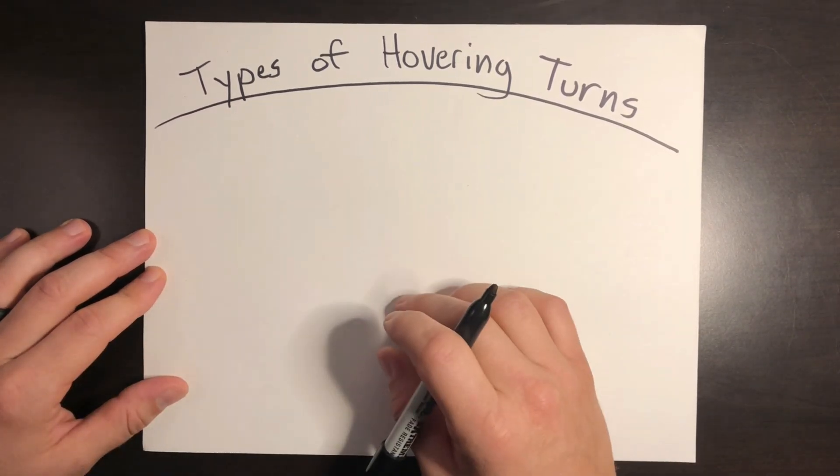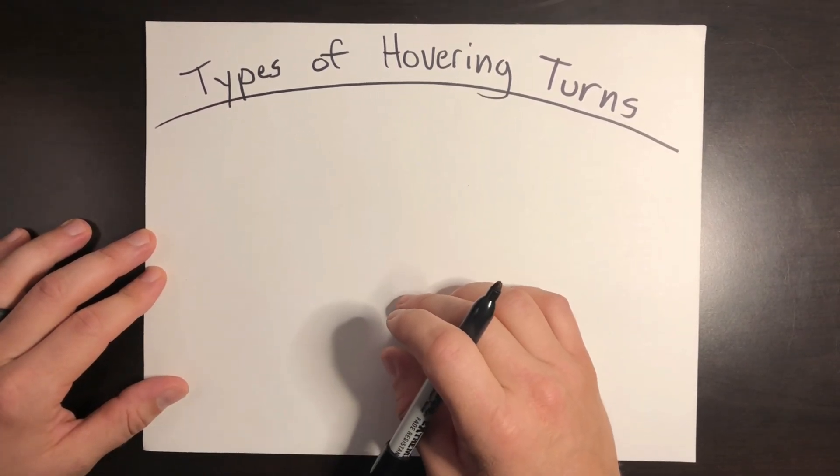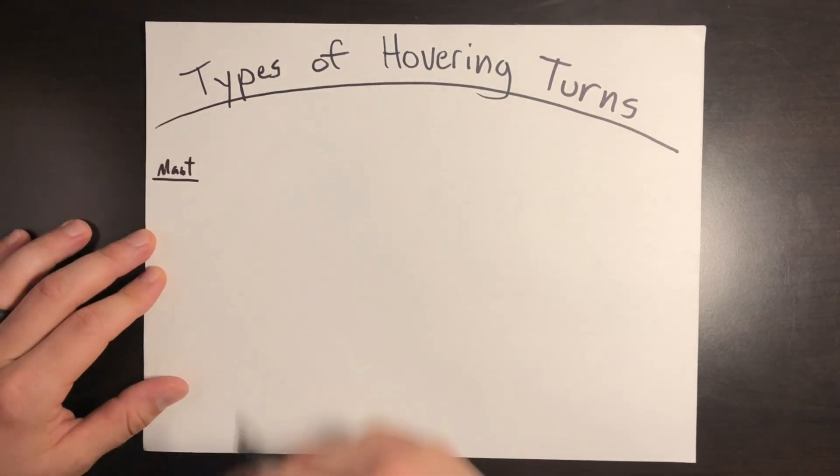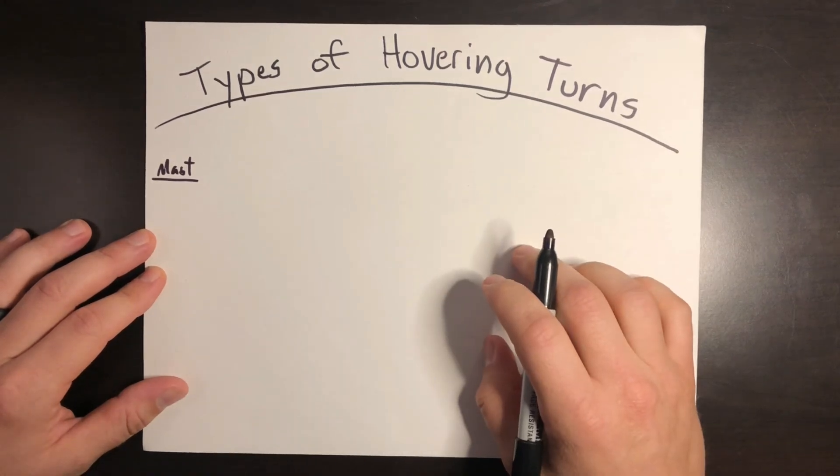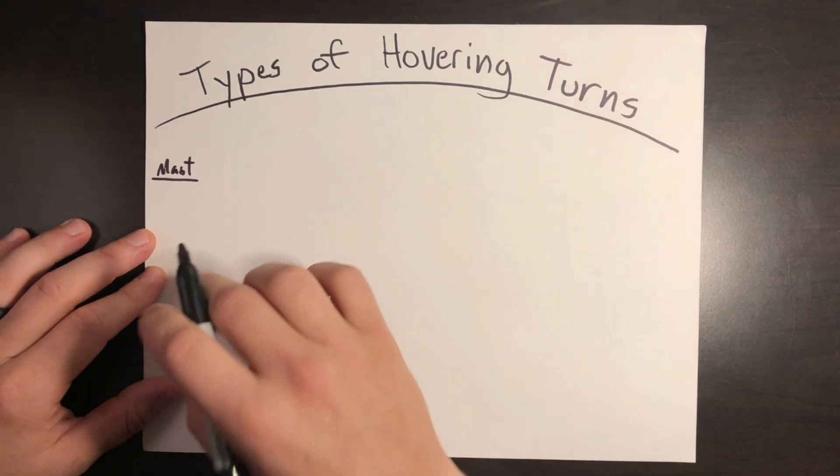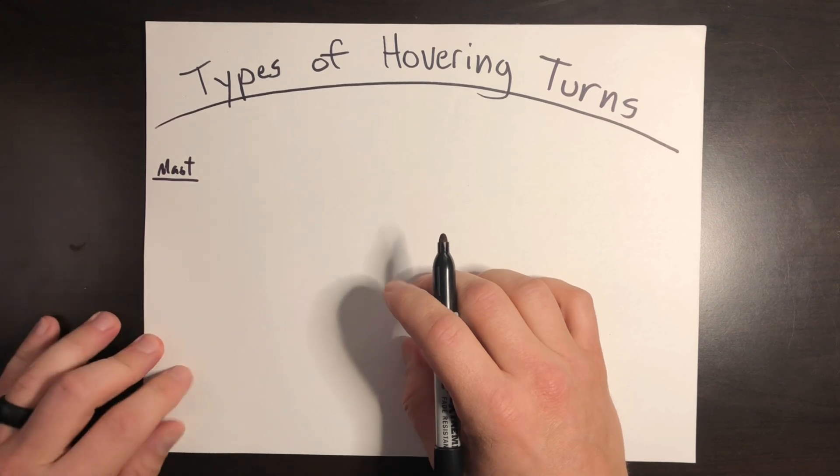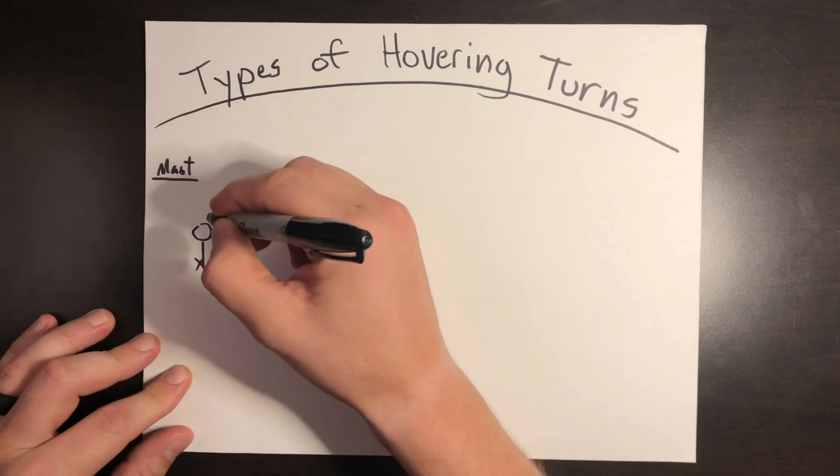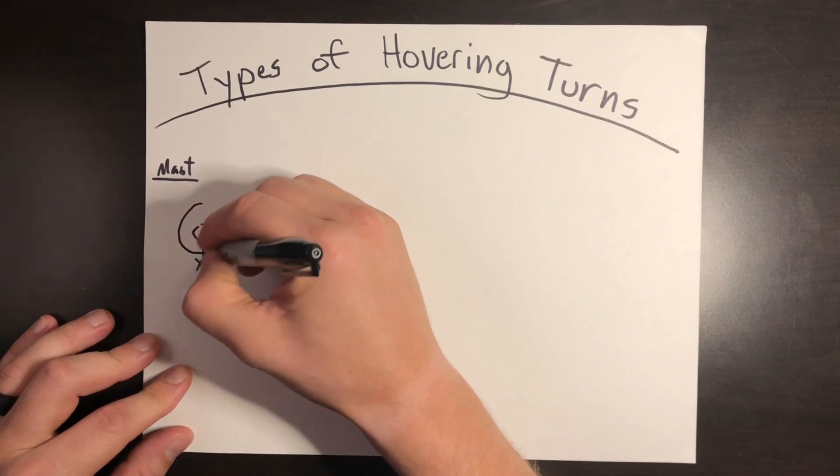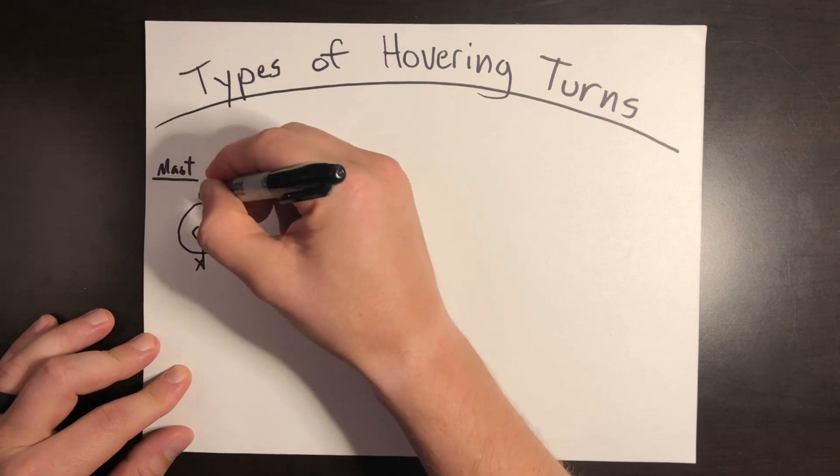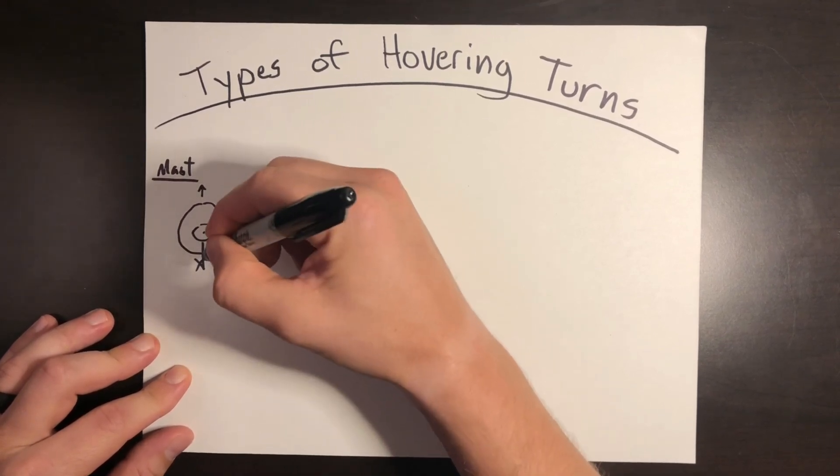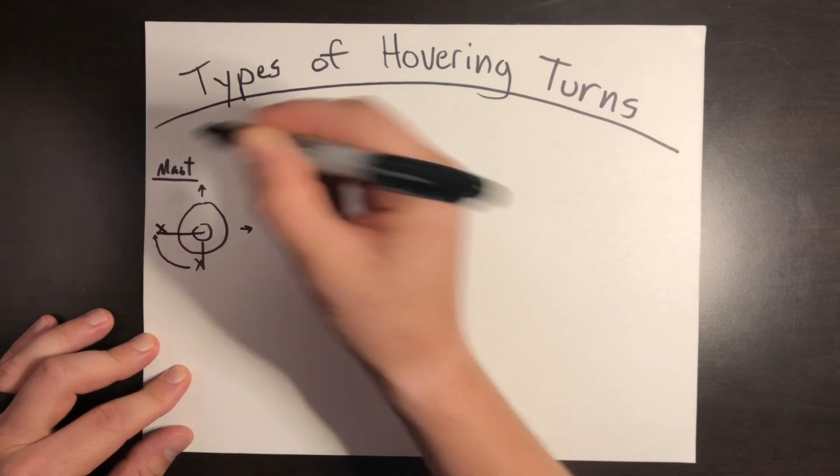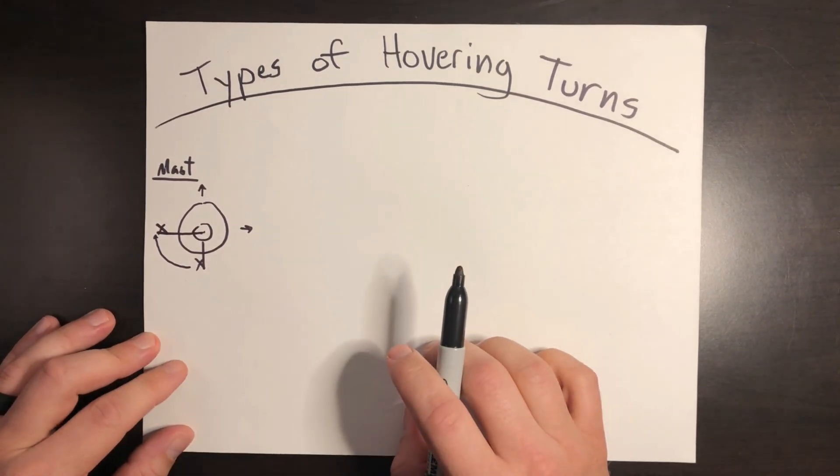The first type of turn is by far the most common. It's what you get taught in flight school, and that is a turn about the mast. The helicopter just turns in place using the mast or the center of the rotor as a pivot point. Let's say I have a helicopter sitting in place here. I've got the rotor blades. Now I want to do a pedal turn. I'd apply right pedal, the tail would pivot around, and now we're facing this direction.